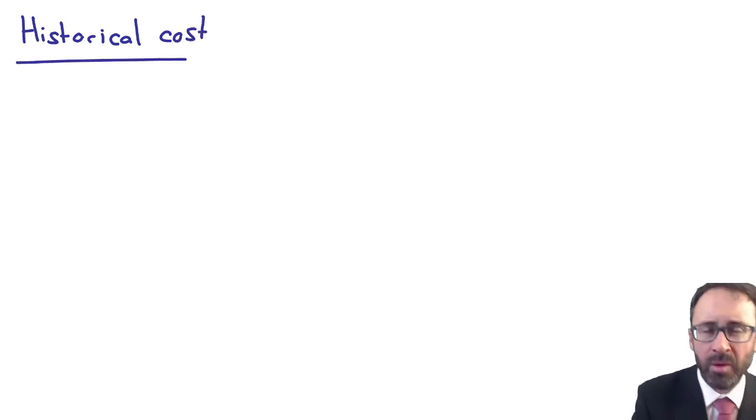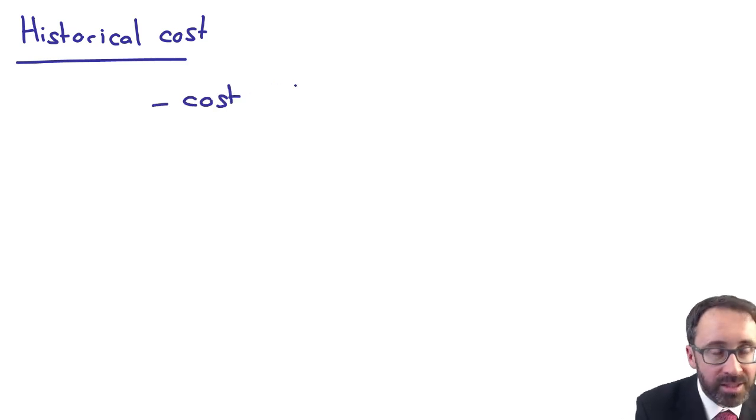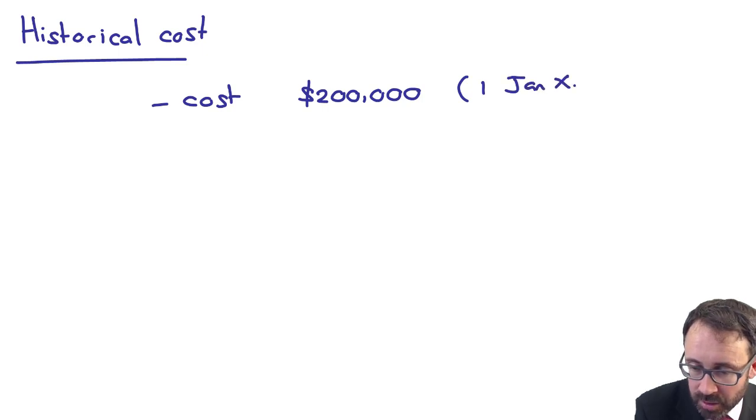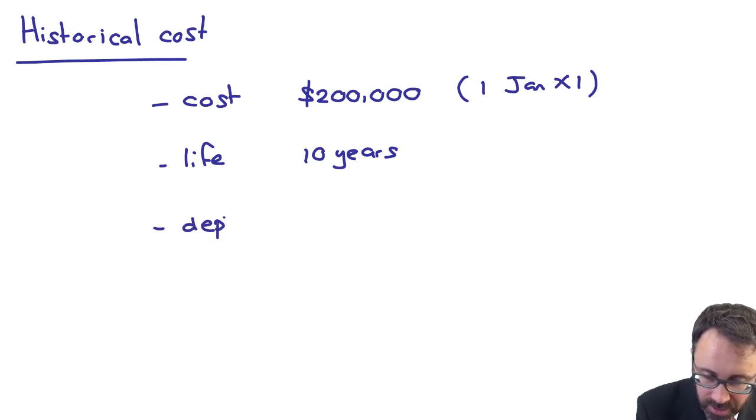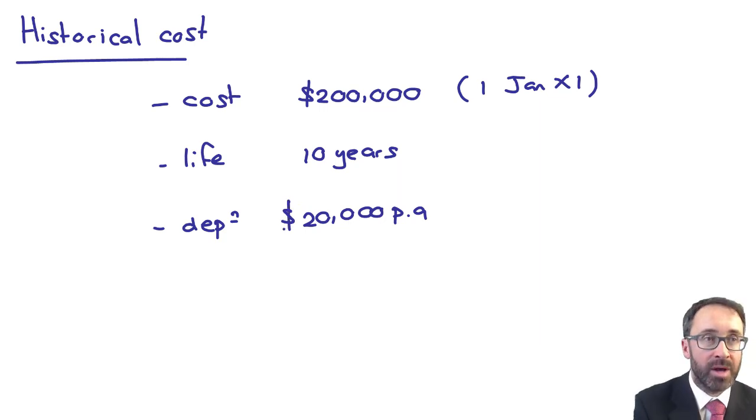Let's go through that with a very brief illustration to show how it works. So you've got your asset, it costs $200,000. And that was there on the 1st of January X1. So that is its historic cost. The life, let's just say that...